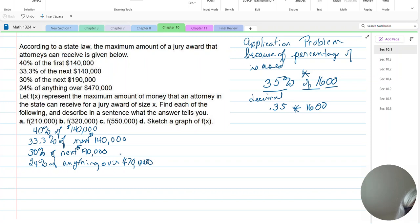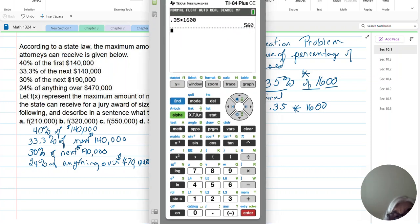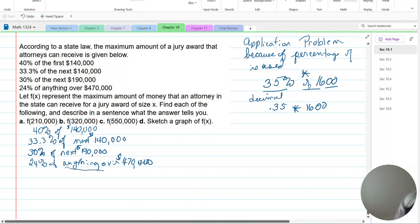So I'm going to take my calculator and I'm going to add the $140,000 twice because that's the first one. Plus $190,000. And we should get $470,000. So that's why they say anything over this amount because those three average to that. So let X represent the maximum amount of money that an attorney in the state can receive for a jury award of size X. Find each of the following. Describe in a sentence what the answer tells you.